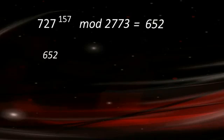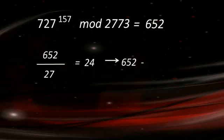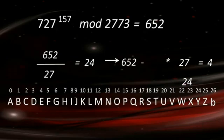When you put it into practice 727 as a ciphertext, to the power D157 mod N you get temp and temp over the number of characters is 24, that would be your first character. For the second character you do temp minus first character multiplied by the number of characters, you get 4.